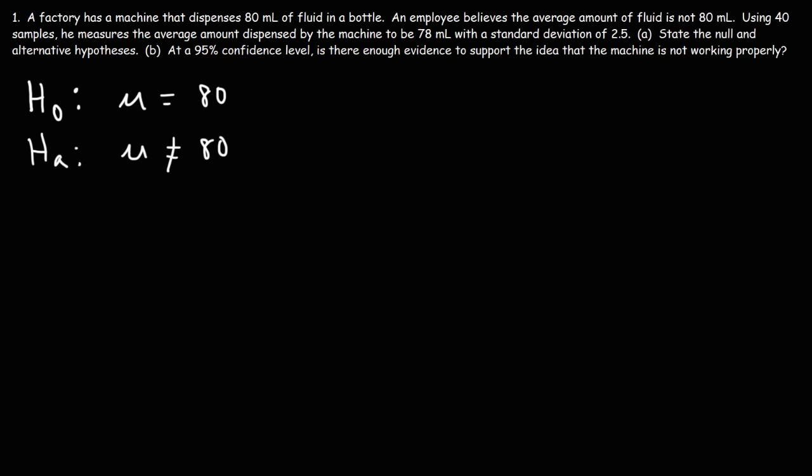Now Part B: at a 95% confidence level, is there enough evidence to support the idea that the machine is not working properly? First we need to determine what type of test we're going to do — is this a one-tail test or a two-tail test? The fact that the alternative hypothesis has mu not equal to 80 means it could be more than 80 or less than 80, on the left side or the right side. We need to conduct a two-tail test.